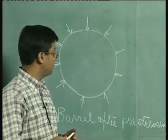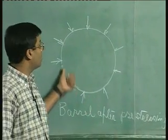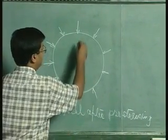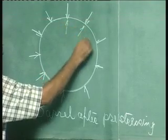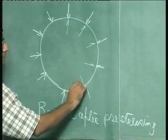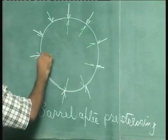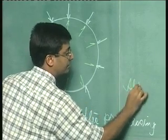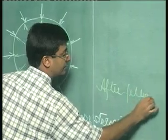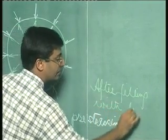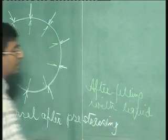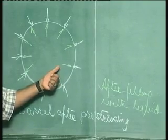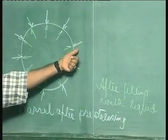When the barrel is first pre-stressed, the pre-stressing causes a hoop compression throughout the barrel. When we fill the barrel with liquid, the liquid creates a hoop tension. The hoop tension created by the liquid is counteracted by the hoop compression generated due to the pre-stressing.